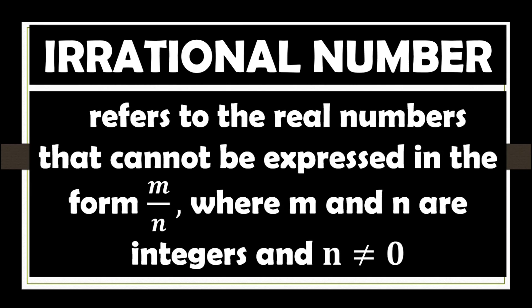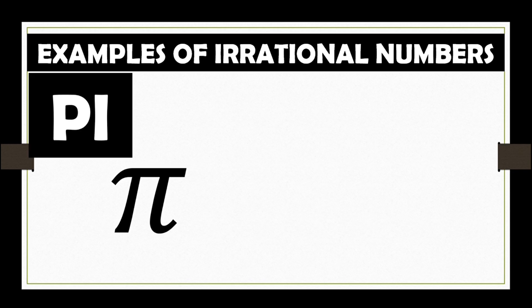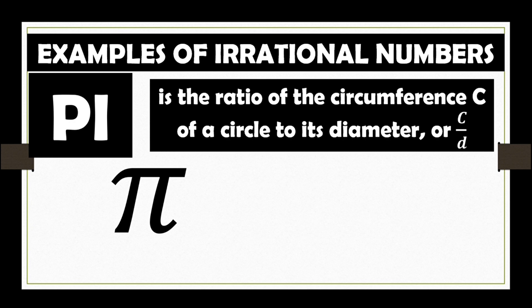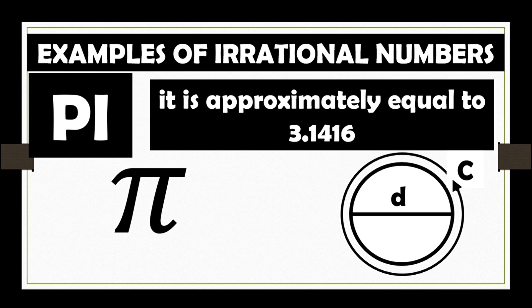Let us also define irrational number. It refers to the real numbers that cannot be expressed in the form M over N where M and N are integers and N is not equal to 0. These are the examples of irrational number. Pi with this symbol. Pi is the ratio of the circumference C of a circle to its diameter or C over D. It is approximately equal to 3.1416 and illustrated in this figure.